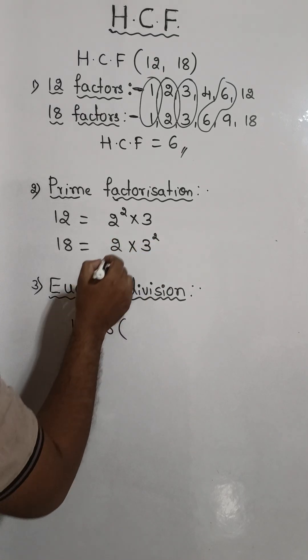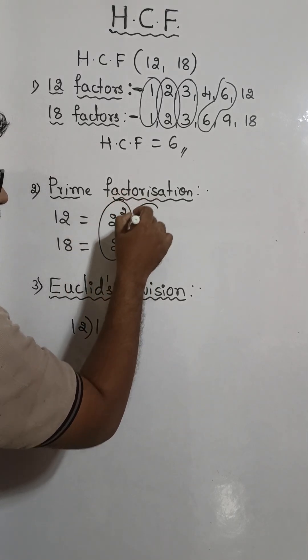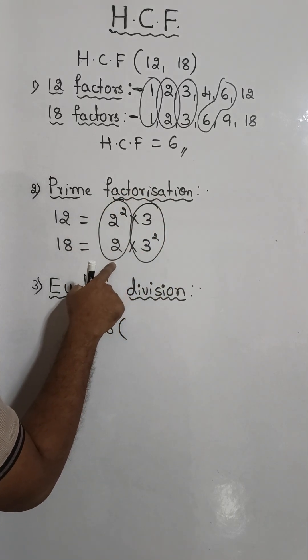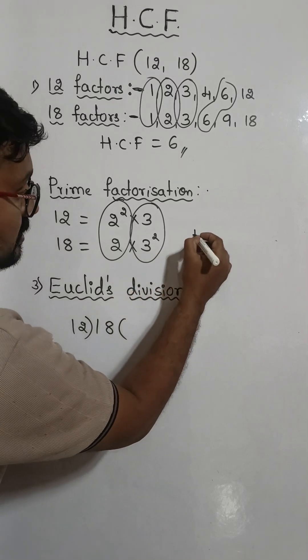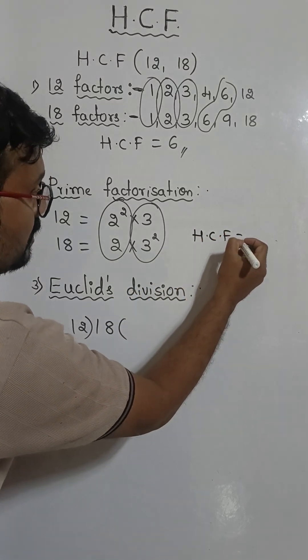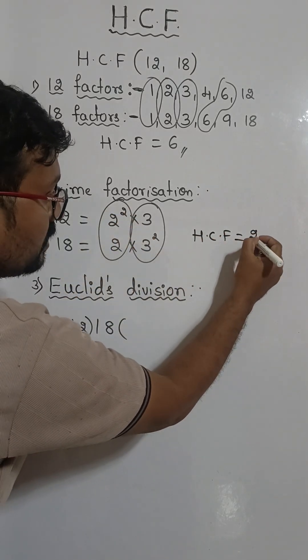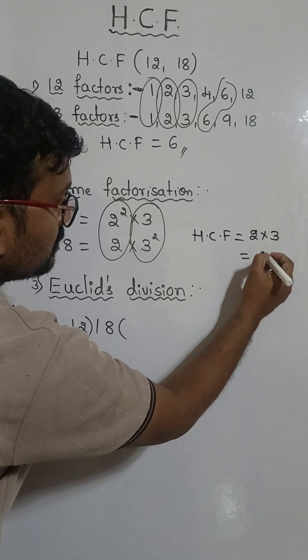The HCF is in the common factors, that is 2 and 3. The lowest power we need to write. So HCF is equal to 2 times 3, which is equal to 6.